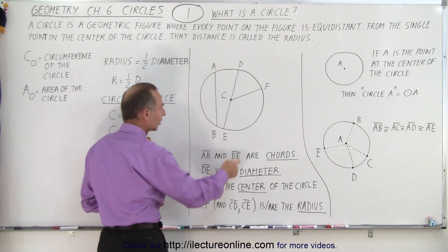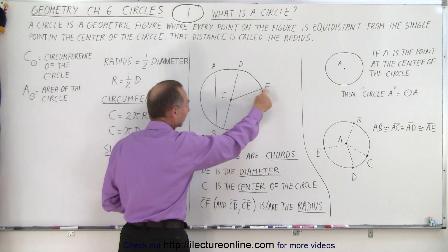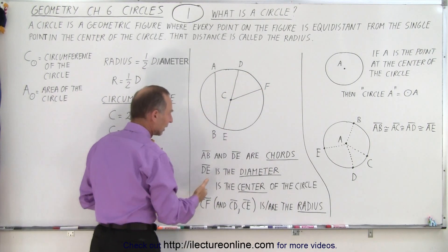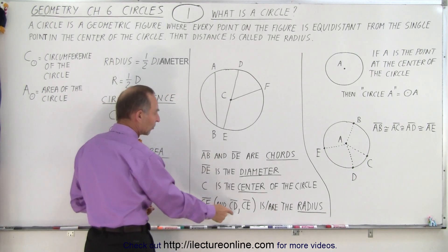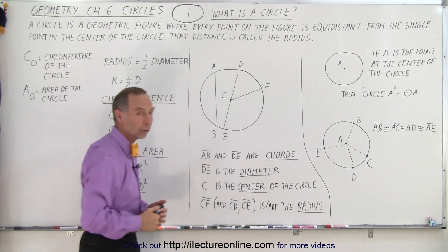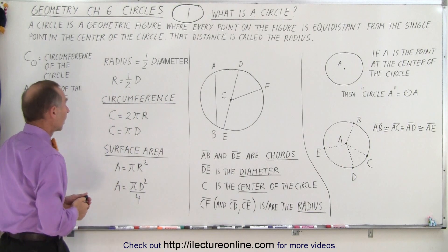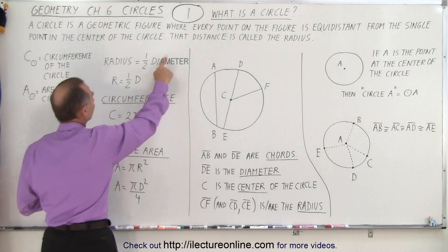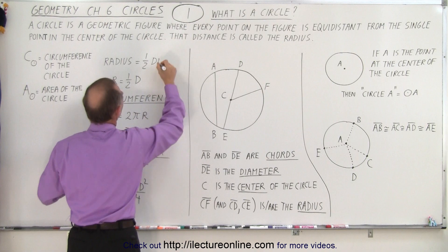And CF, a line from the center to the outside on a point on the circle, that is then called the radius. Notice that CD and CE can also be called the radius. The radius is half, and of course I didn't finish this word yet, it's half the diameter.